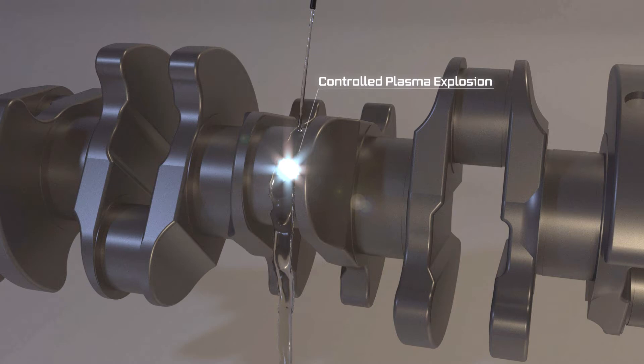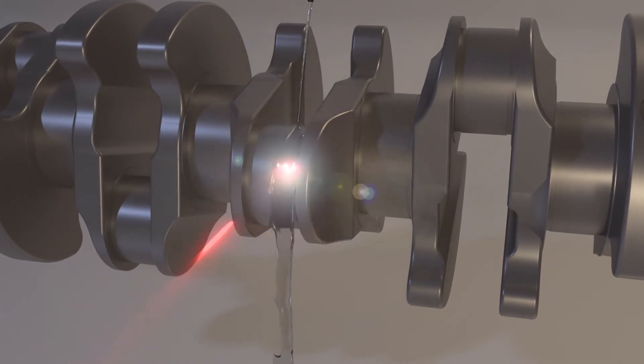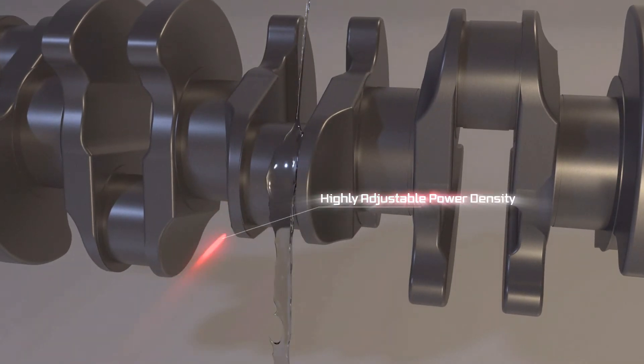The Prokudo laser peening system has the capability to optimize the process to meet any customer's needs by adjusting the power density, which measures the level of pressure on the part.